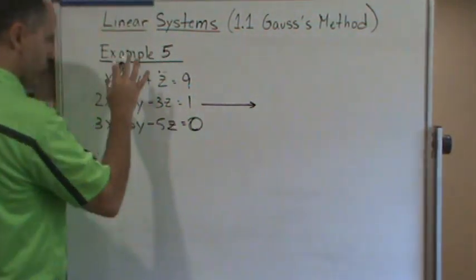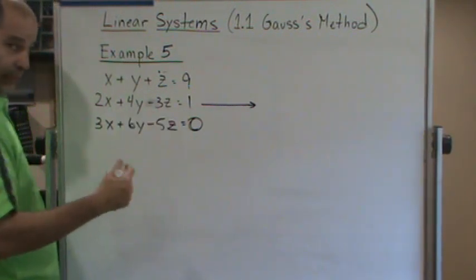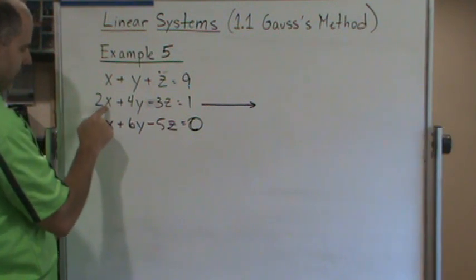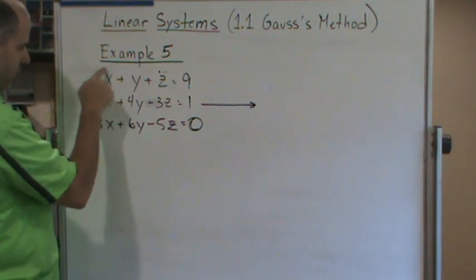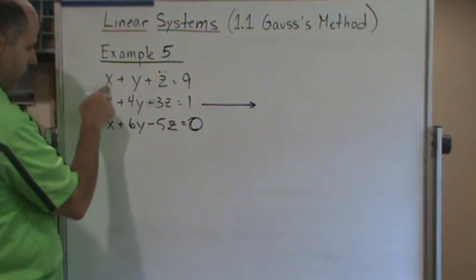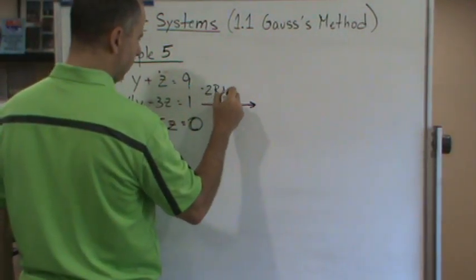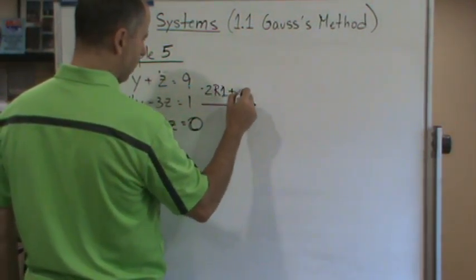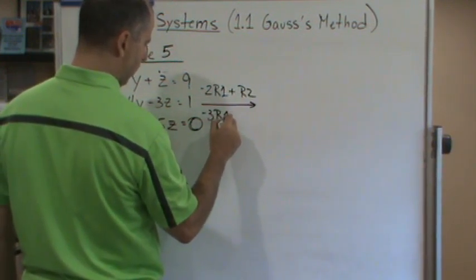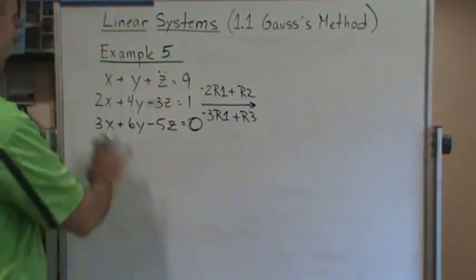We're going to do two operations at a time to get rid of these two x's. The two EROs we'll use: multiply row one by negative two and add it to row two, then multiply row one by negative three and add it to row three. So: negative two times row one plus row two, and negative three times row one plus row three.